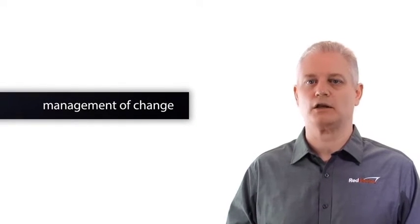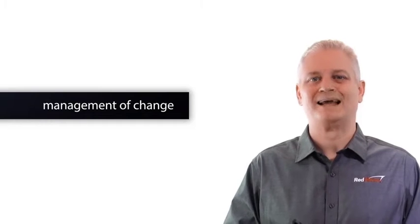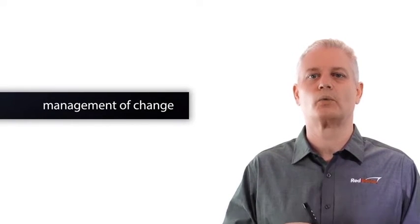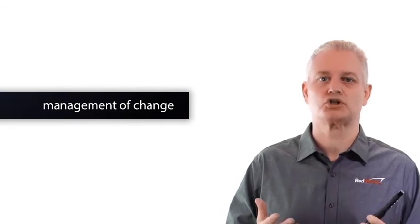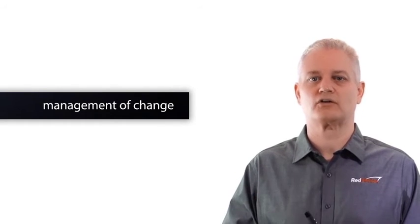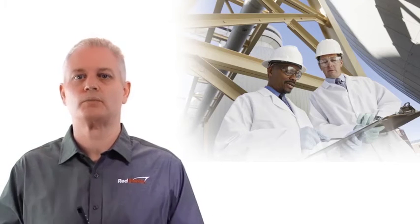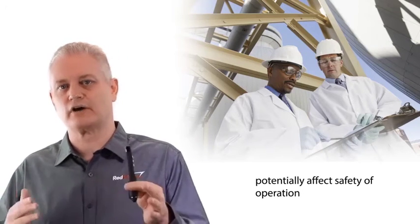Another very important element is called management of change. Management of change is very critical because in a chemical plant operation we want to be very careful before we make any type of material change to a process that could affect the overall safety of the process. For instance, if we add a new line, change a process, maybe increase the flow throughput, we need to consider this from a management of change process. Does this potentially affect the safety of this operation?